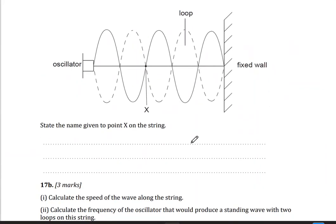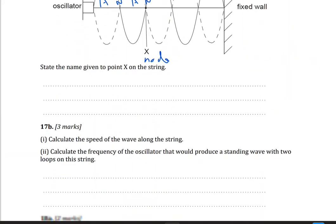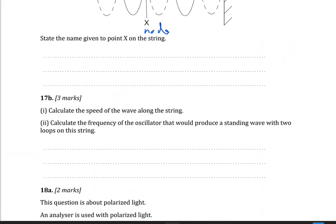Now state the name given to point X on the string. So this point, this point is node. Here I have here antinode, node, antinode, node, antinode, nodes, etc.